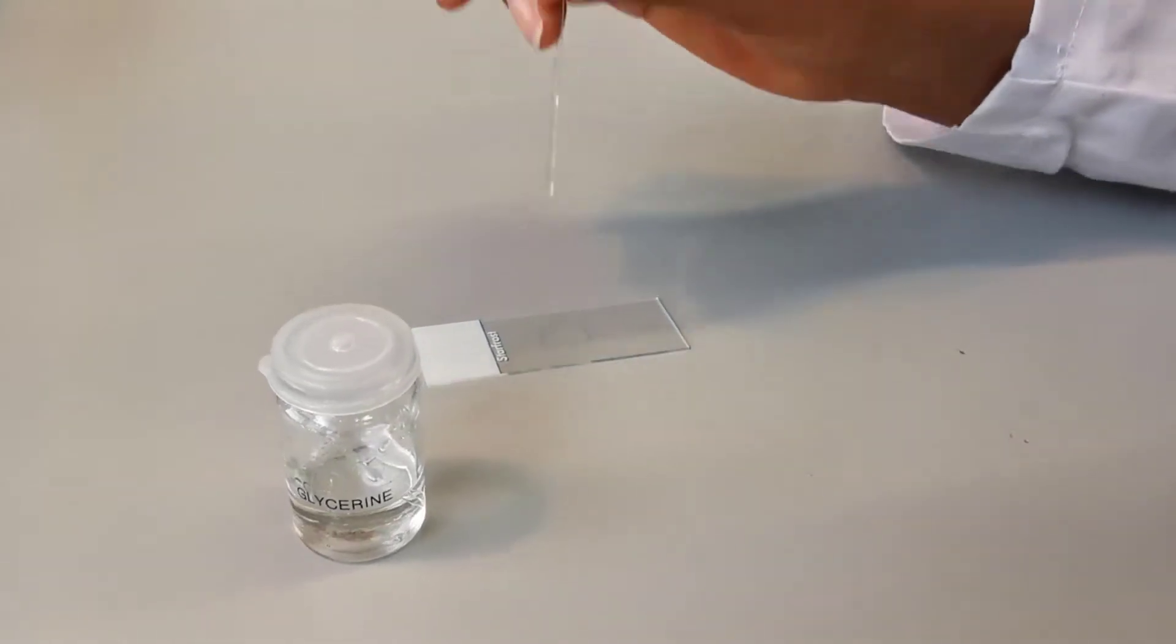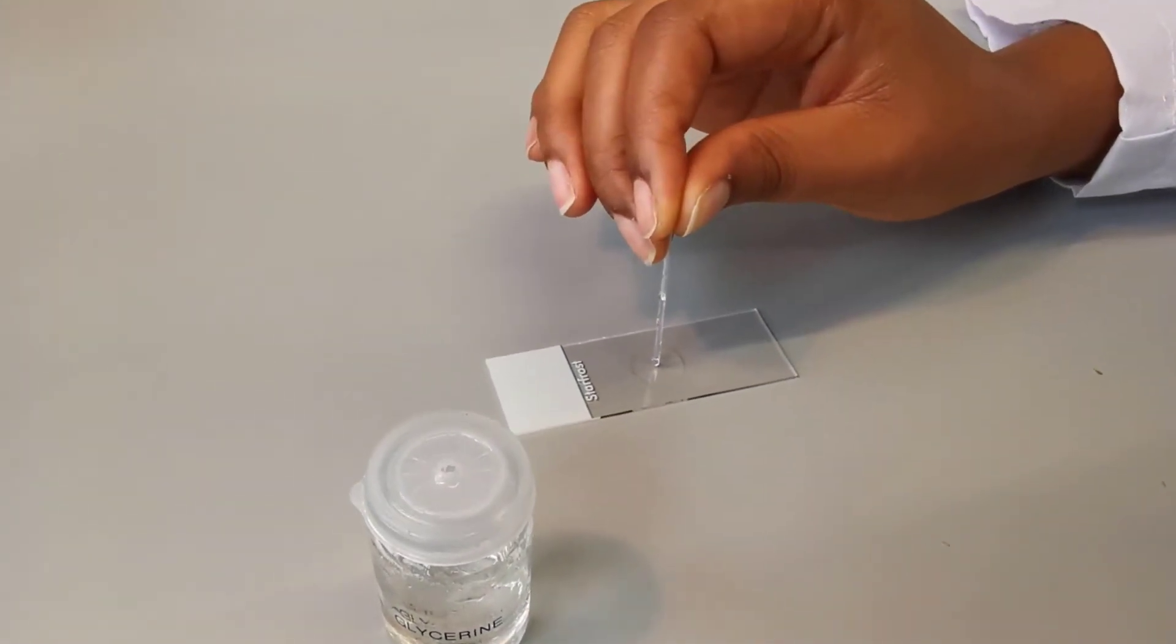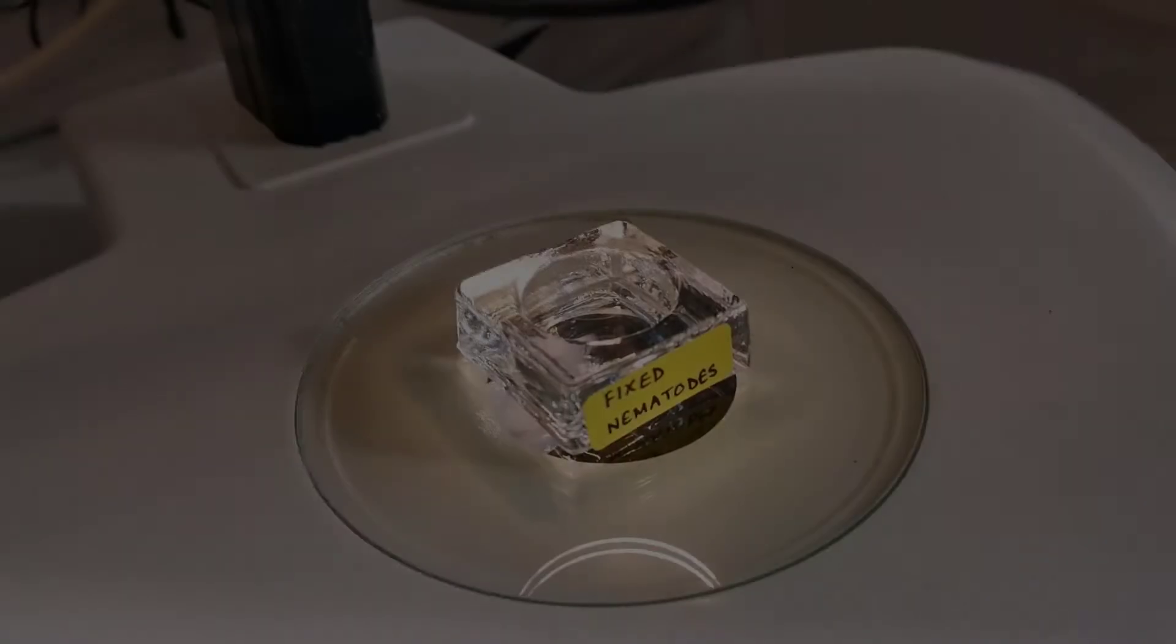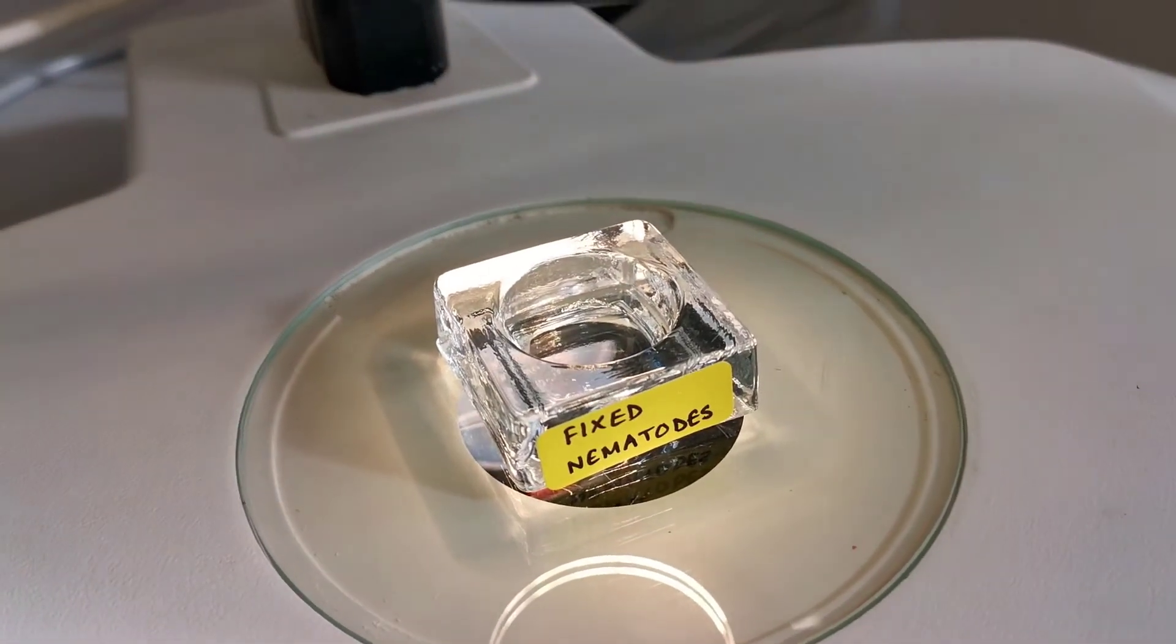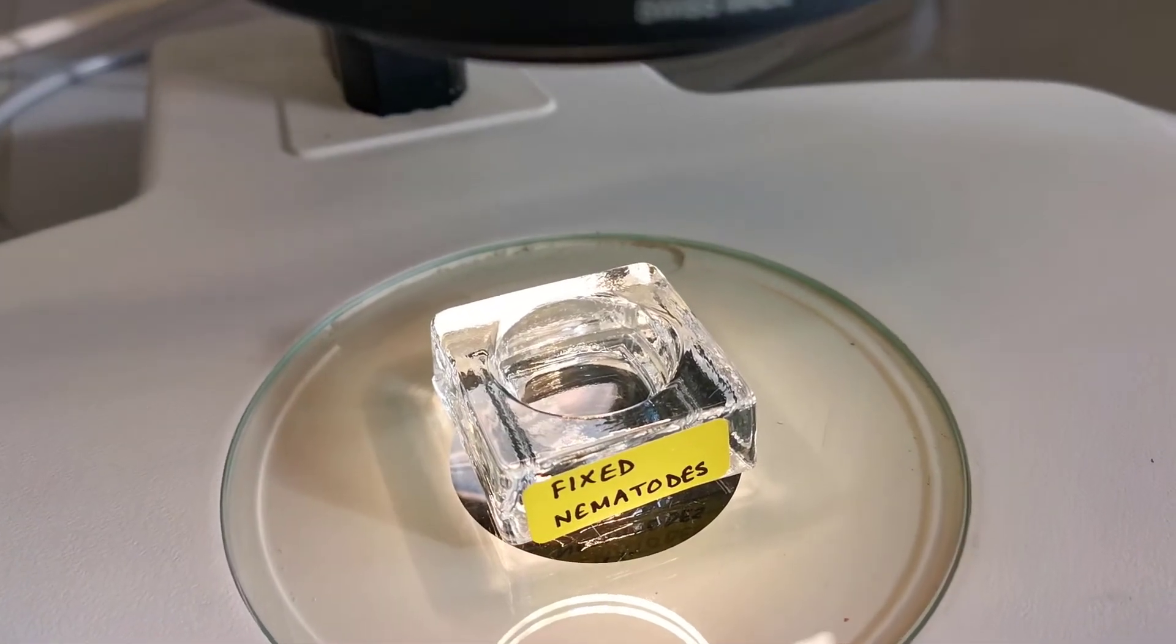The next step is to transfer a small drop of glycerin in the middle of the wax ring. And at this point, we will take our nematodes fixed in 4% formaldehyde and stored in glycerin medium.